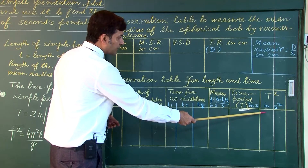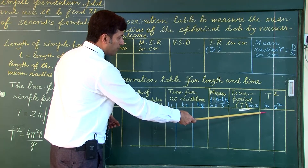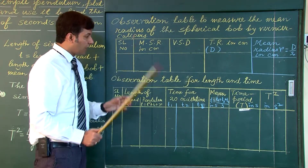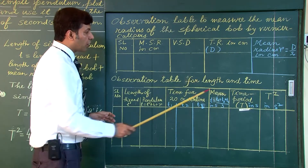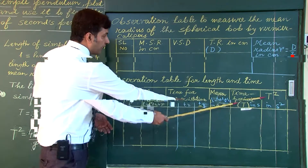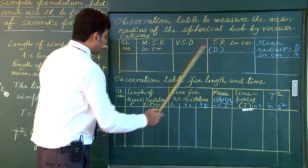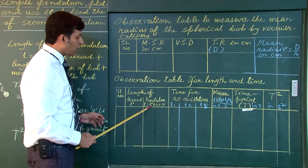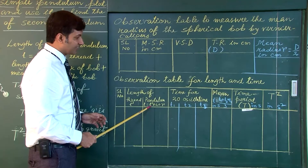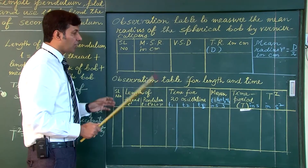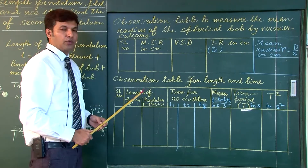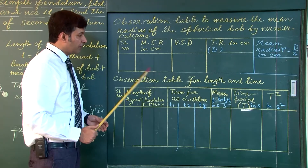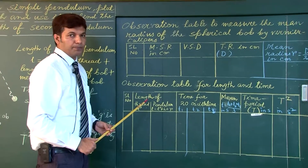After taking the square of the time period, we have to plot a graph with T square along the y-axis and effective length along the x-axis. With the help of this graph we will be calculating the effective length of seconds pendulum.